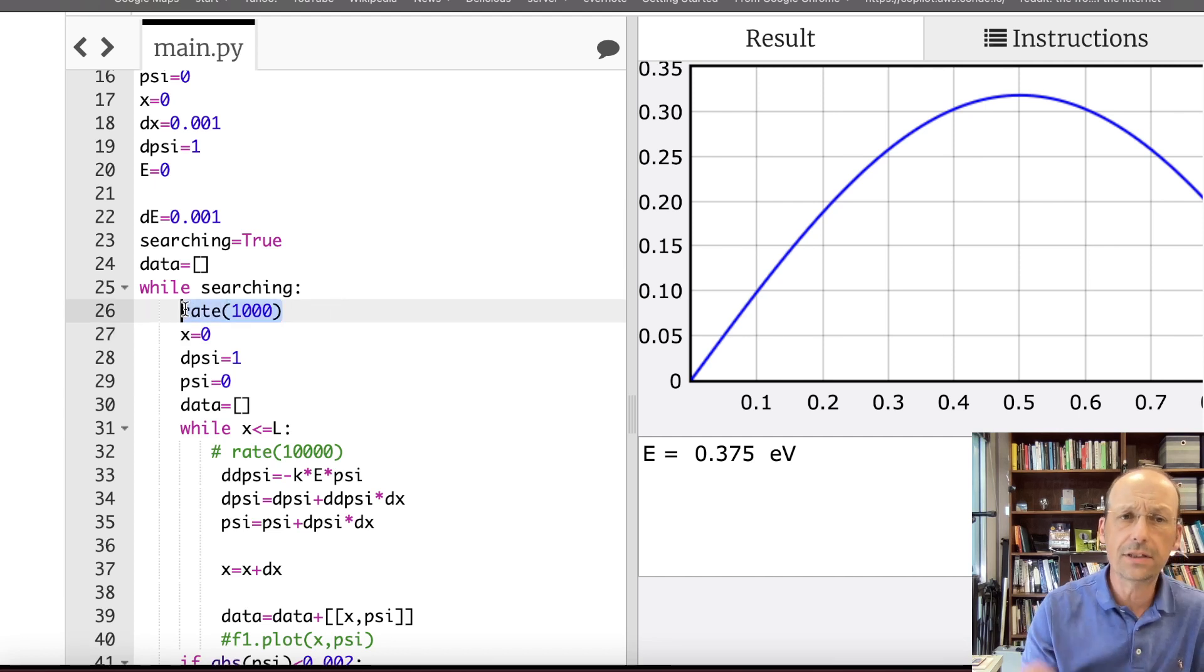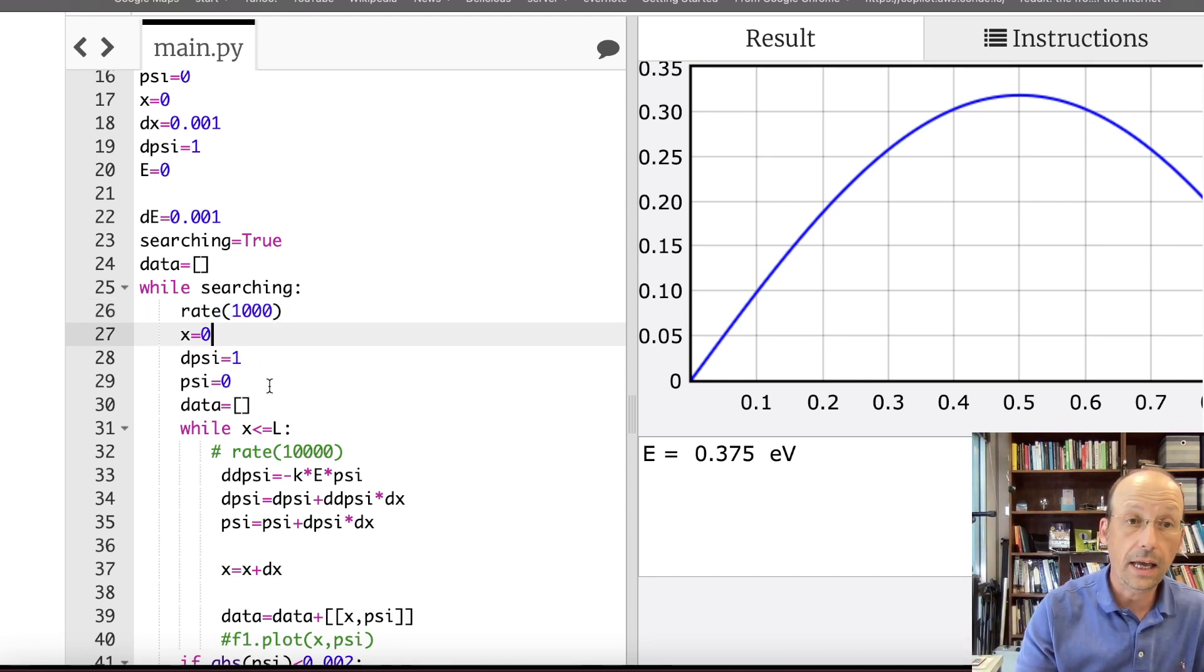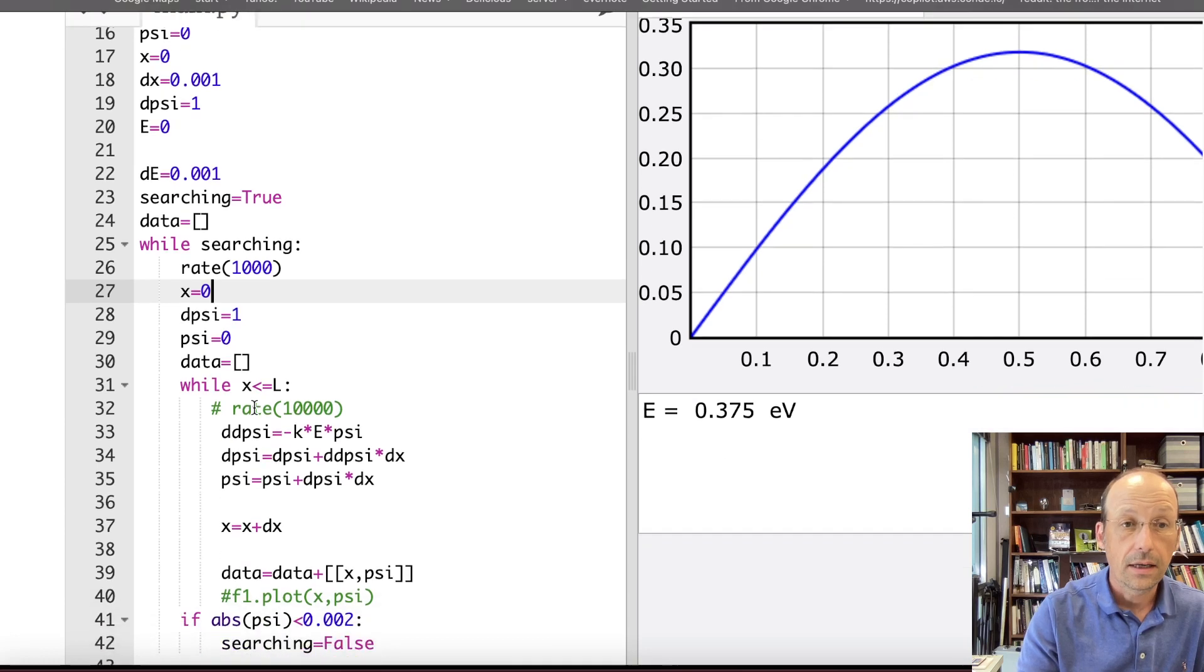Rate 1,000. This just says don't do more than 1,000 calculations per second. And it still kind of runs pretty slow. So then I start back at x equals zero. I start at psi equals zero. I start at the derivative of psi is one.